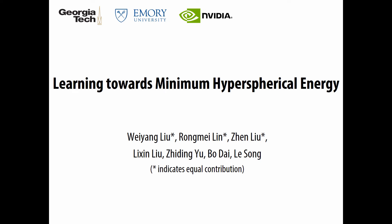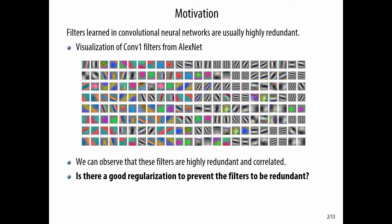This is a brief introduction for our paper, Learning Towards Minimum Hyperspherical Energy. Our idea is motivated by the fact that filters learned in convolutional neural networks are usually highly redundant. See the first convolution layer from AlexNet as an example — one can observe that these filters are highly redundant and correlated.